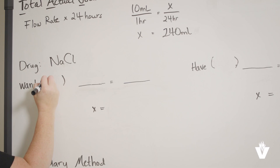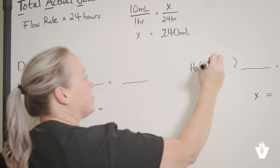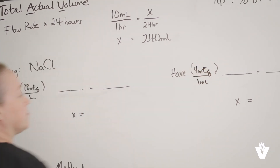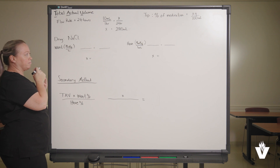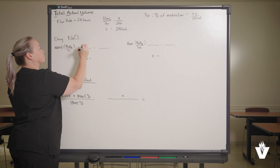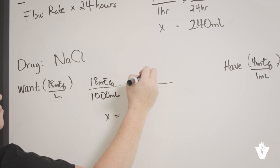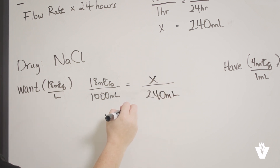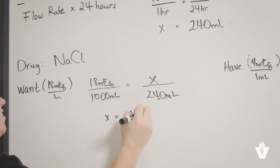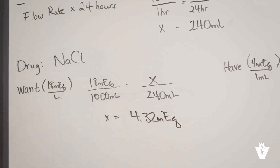I will now show you how to calculate an additive, as it is a very similar process. The first additive is sodium chloride. The order wants 18 milliequivalents per liter; the pharmacy has in stock 4 milliequivalents per 1 milliliter. We must get that down to milliliters as this is what the pharmacy uses, knowing that 1 liter equals 1,000 milliliters. On the left side, place 18 milliequivalents over 1,000 milliliters; on the right side, place the unknown milliequivalents over 240 milliliters. Cross-multiply and divide to solve for X. X equals 4.32 milliequivalents, which is the total amount of milliequivalents needed of sodium chloride.